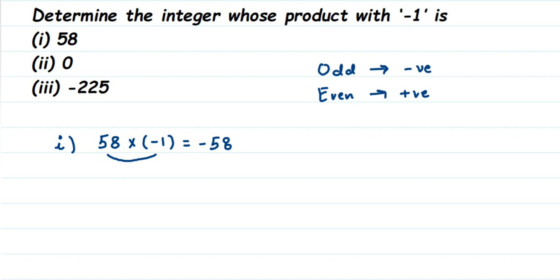We have minus one, which is a single sign—it's odd—so the answer is -58. Next is 0 multiplied by -1. It will be 0 because when you multiply 0 with any number, whether it's an integer or any number, you'll always get 0.